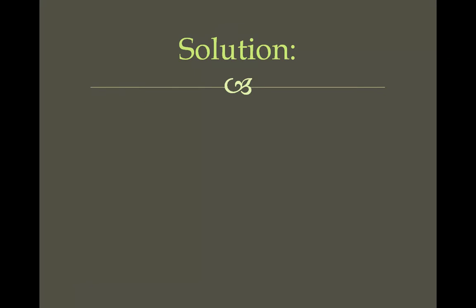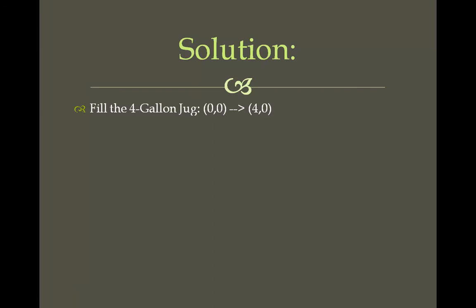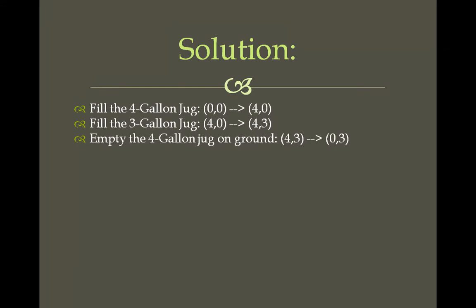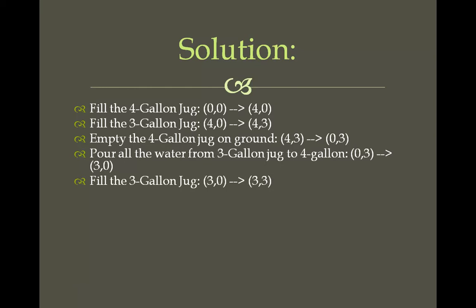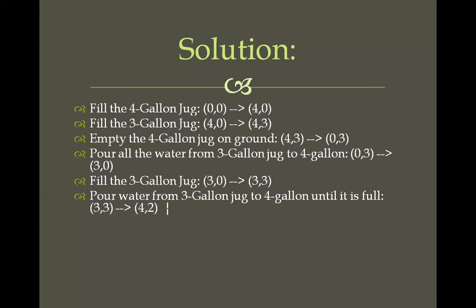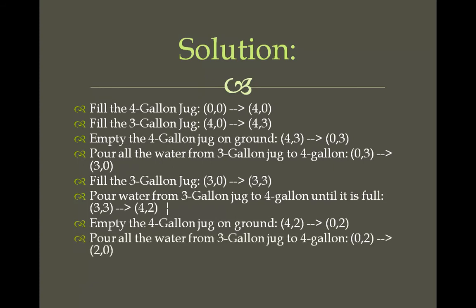One of the easiest ways to solve this is as follows. First, fill the 4-gallon jug completely. Then fill the 3-gallon jug from it. After that, empty the 4-gallon jug on the ground, and pour all the water from the 3-gallon jug into the 4-gallon jug. Then fill the 3-gallon jug again and pour water from it into the 4-gallon jug until it is full. Then empty the 4-gallon jug on the ground, and finally pour all the water from the 3-gallon jug into the 4-gallon jug. We now have exactly 2 gallons of water in the 4-gallon jug — problem solved.